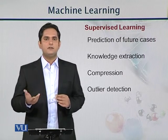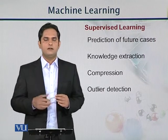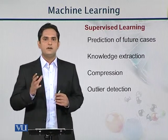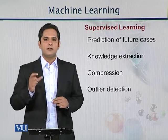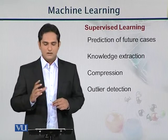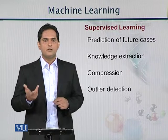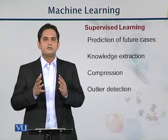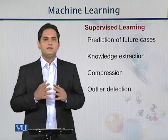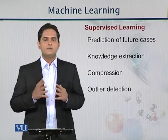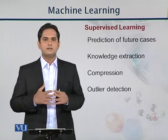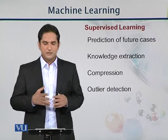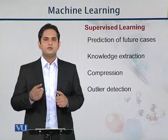But what will happen if it comes across unknown data? It will try to attach some labels to unknown faces also. Similarly, it can be useful for knowledge extraction — the previous data is useful for knowledge extraction. It will also compress the data. In face recognition, we can recognize eyes, beard, and so on. Similarly, it can be used for outlier detection.